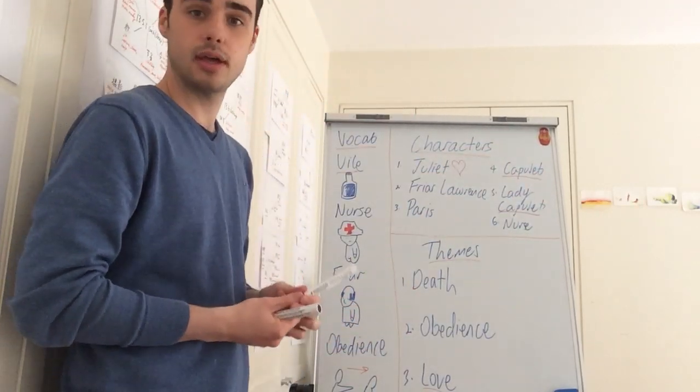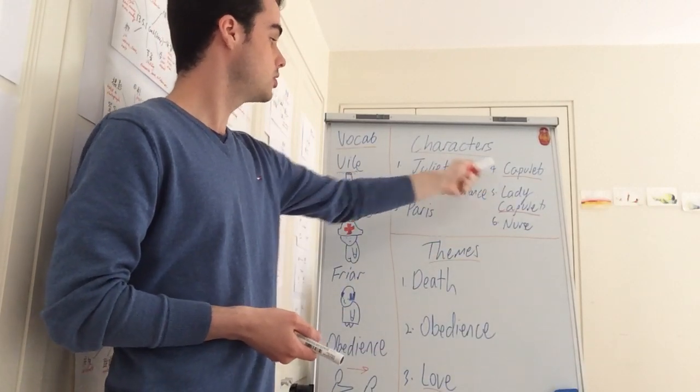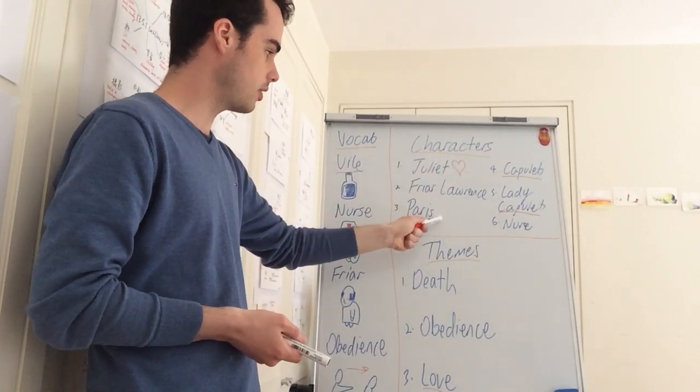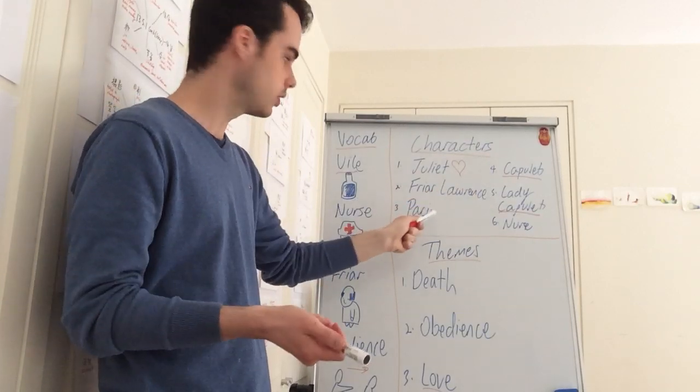And then moving on to that, we have Capulet, which is Juliet's father, who wants Juliet to marry Paris, and Lady Capulet, who also agrees.